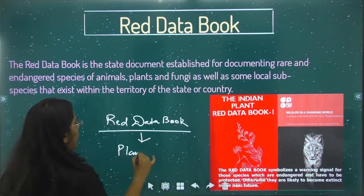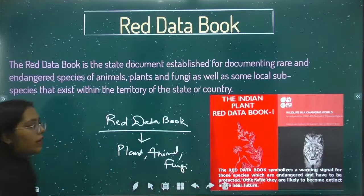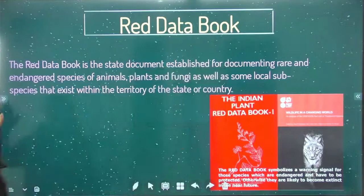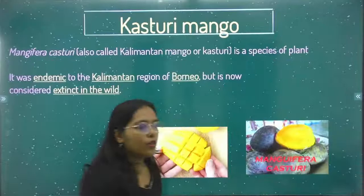Which plants, animals, and fungi have become endangered — they are all listed inside the Red Data Book. Now let's move forward and look at some varieties, some species that have already become extinct. The first one is Kasturi Mango.